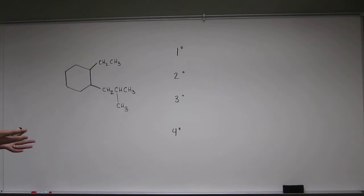Remember, primary carbons are carbons that only have one other carbon bonded to them. Secondaries have two, tertiaries have three, and quaternaries have four.